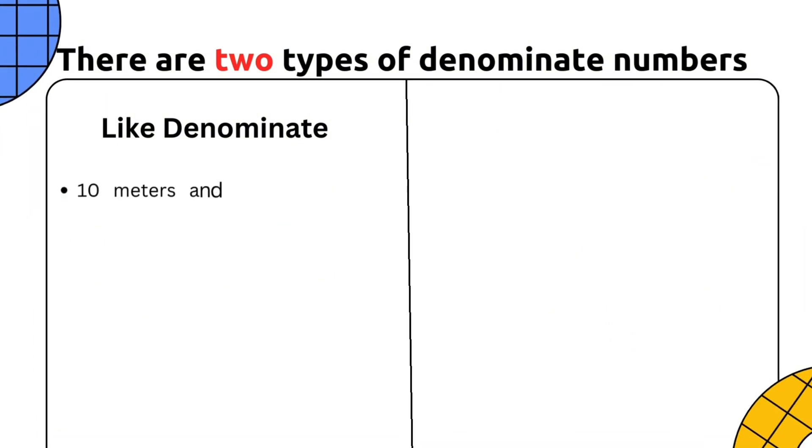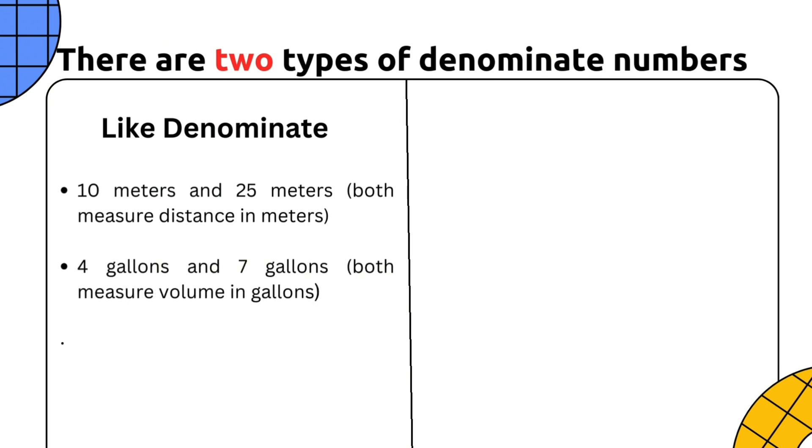For example, in like denominate, 10 meters and 25 meters, both measure distance in meters. Another example, 4 gallons and 7 gallons, both measure volume in gallons.